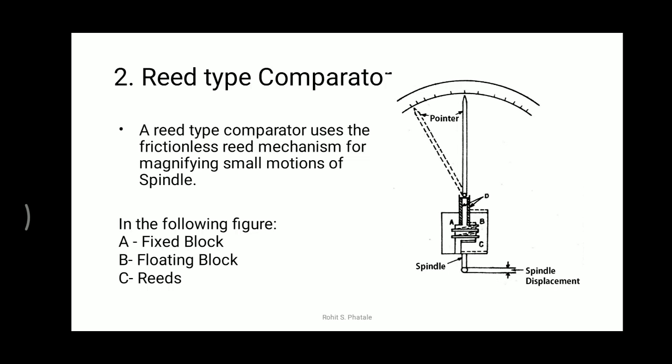Because of that displacement, the pointer will get deflected. The dark lines are the original position of this reed-type comparator and the dotted lines show the displaced positions. You can see one horizontal dotted line and inclined dotted lines — these are the displacements of points C and B when displacement is given to the spindle. The pointer will then move in either direction depending upon the type of displacement given to this reed-type comparator.